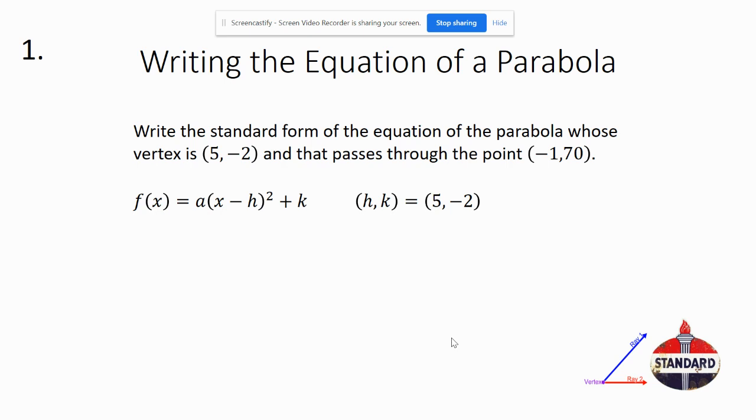So what we want to do here is use our vertex form of an equation to find a. We're going to find what the a value is. We know that the vertex goes through the point 5, negative 2.